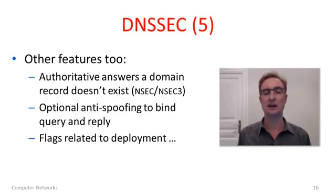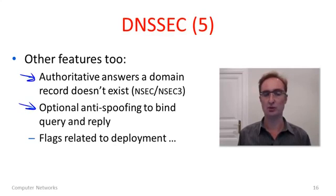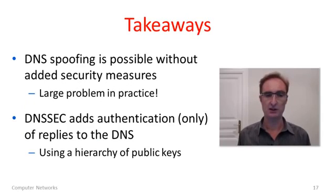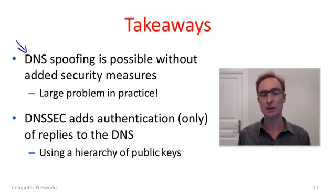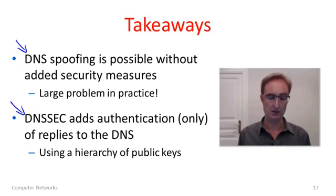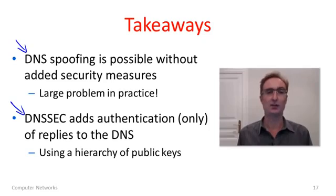There's a lot more in DNSSEC too — authoritative answers that a record doesn't exist, optional anti-spoofing to more tightly bond the query and reply, and flags related to deployment — but in this brief overview we don't have time to cover them. The key takeaways are: DNS spoofing is possible without added security measures, giving a sense of how things can be corrupted in practice and it's very much a large problem. DNSSEC as a solution is interesting because it adds authentication only to the replies of the DNS — not confidentiality — and it does this using a hierarchy of public keys. So now you know about DNS security.